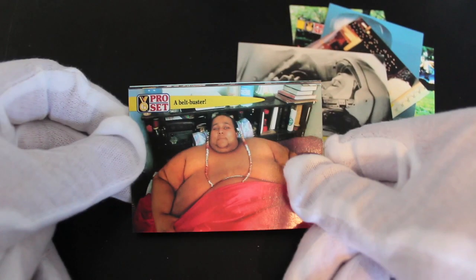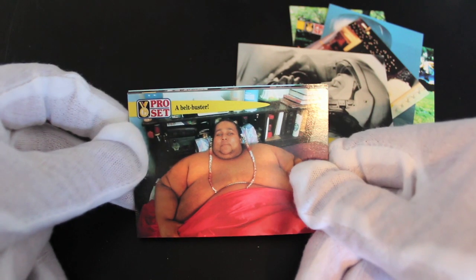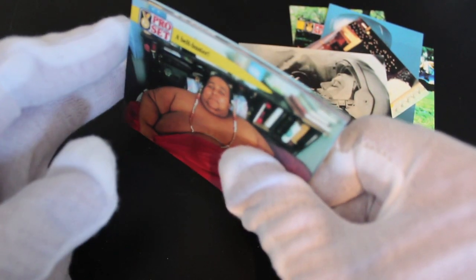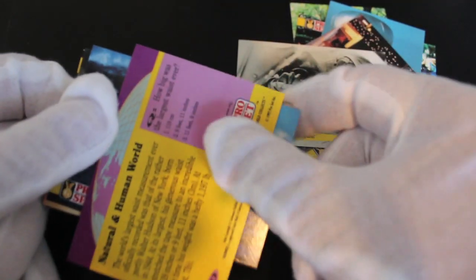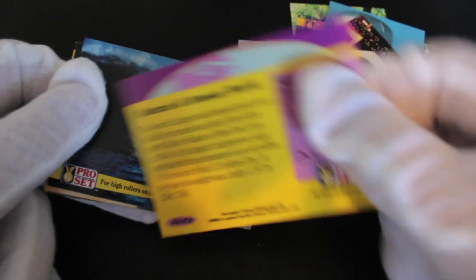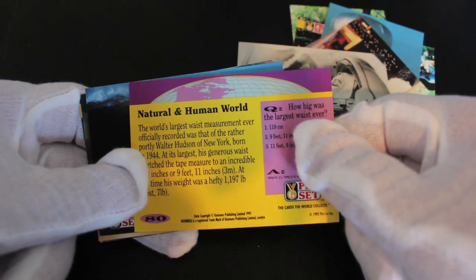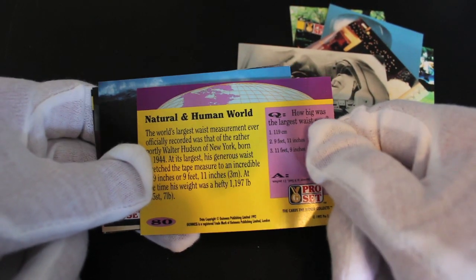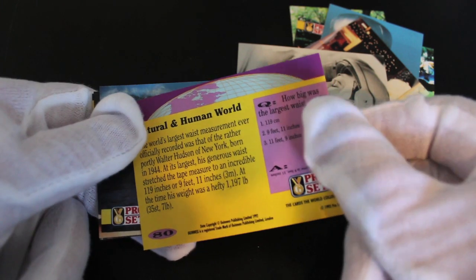A belt buster. Who's that then? There we go, here we go. World's largest waist measurement ever recorded was that of rather poorly Walter Hudson of New York, born in 1944. Wow. Tape measures and curl 119 inches or 9 feet 11 inches, 3 meters.